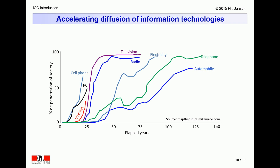This next slide conveys the same message, although in a somewhat different form, showing the adoption rate of each technology directly in numbers of years rather than over astronomic years. The curves relating to more recent technologies are thus all squeezed to the left of the graph, while those pertaining to older technologies spread more slowly further out to the right.